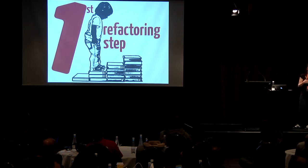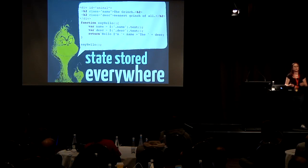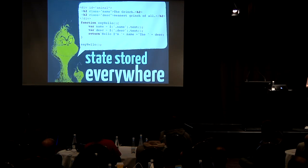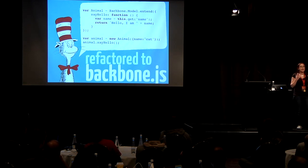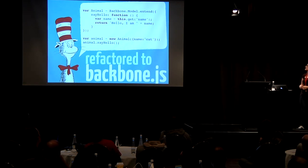So if you found yourself swimming through jQuery soup, pulling in a library like Backbone is an awesome first step to adding structure to your code. Here I've got an example where state about an animal is stored in the DOM, and a function associated with that animal has to use jQuery to query into the DOM to grab that state. If I refactor this with Backbone, I can create an animal model, put that 'say hello' function inside it, and then I only need to query inside the model — I only need to ask myself what my state is.